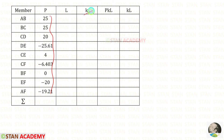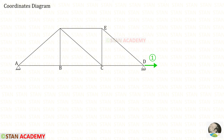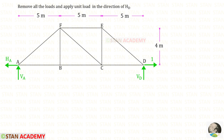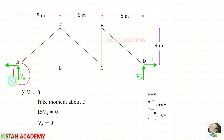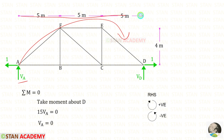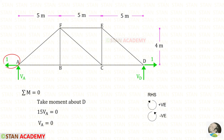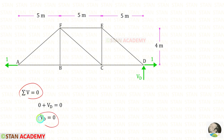Now we have to find the values of k. We remove all loads from the truss and apply a unit load in the direction of HD. We need to find the three reactions. Applying Sigma H = 0, HA = 1. To find VA, taking moment about D: 15 VA = 0 since the horizontal unit load has no perpendicular distance about D, so VA = 0. Since there is no vertical load, VED = 0.